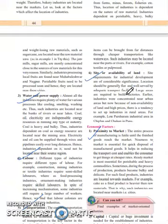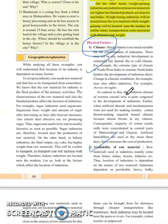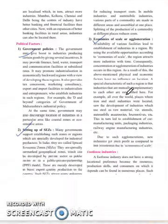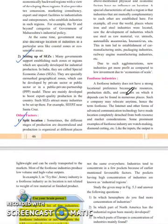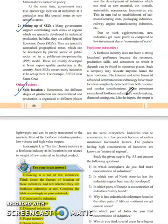Most probably, if this question is 8 marks, the question will come as: what are the factors affecting the location of industries? So you have to write physical, economic, and political factors. Kindly take note of this very important topic and section of this chapter.